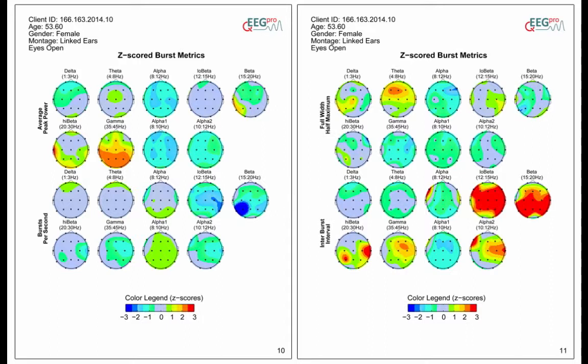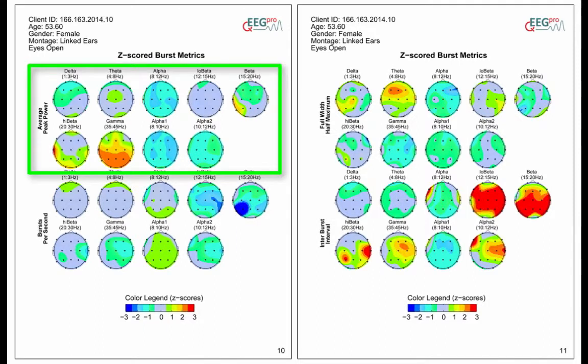Within an EEG recording there are usually a number of bursts that are detected within a particular frequency band, and each of these bursts has a maximum amplitude. The Z-scored average peak power depicts the deviances in the average of these maximum amplitudes for 9 frequency bands.